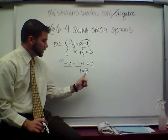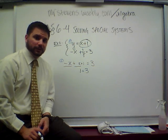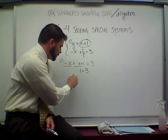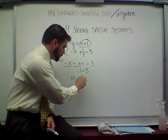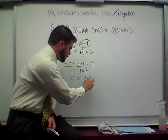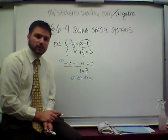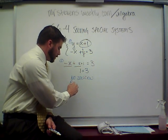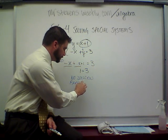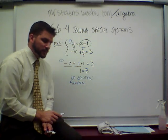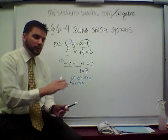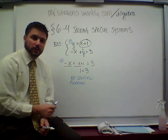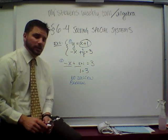Solving the equation, negative x and positive x zeroes out, and we get 1 equals 3. The problem is, when does 1 equal 3? Never. So what this means is that there is no solution. No solution means that these two lines are parallel — they will never cross each other. They both run along the same slope and they just have different y-intercepts. So this is our first example of a special system.